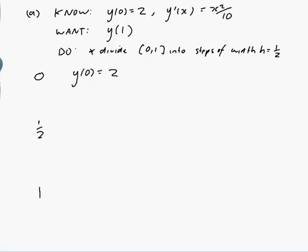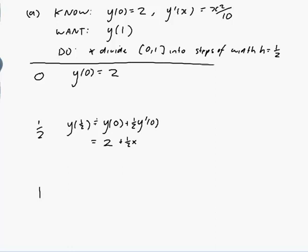So I know what y(0) is, that's 2, and now I want to calculate what y(1/2) is. So y(1/2) would be according to my formula, would be y of the previous step of 0 plus h which is a half times y'(0). Well I know what y(0) is, that's 2 plus a half times I need y'(0). Alright, just a second. Let me turn all of this into a table.